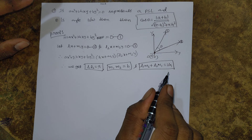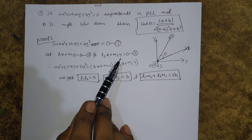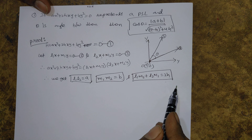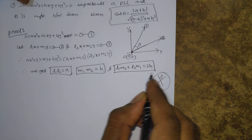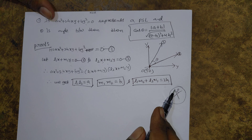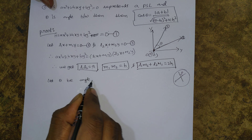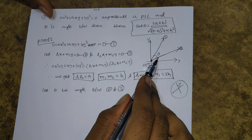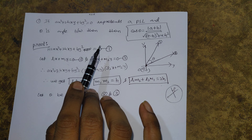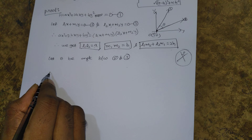Now, we have the separate line equations. To find the angle between a pair of lines, if we have separate lines and need to find the angle between them, we use the straight line angle formula. Let theta be the angle between Equations 2 and 3. The pair of lines has angle theta, and this represents the two separate lines, so theta is the angle between Equations 2 and 3.